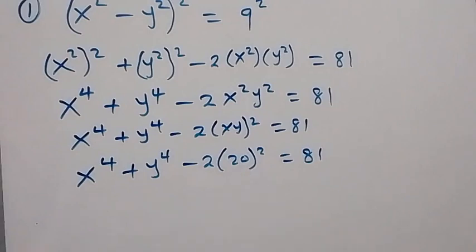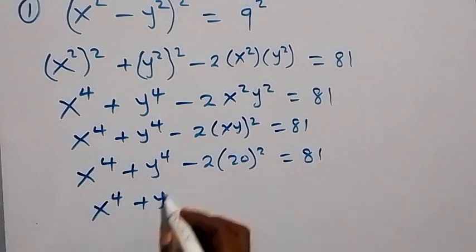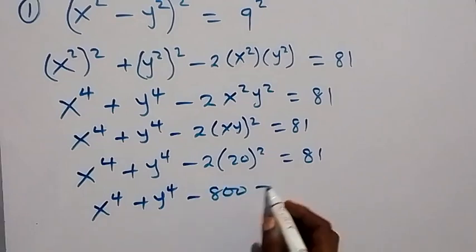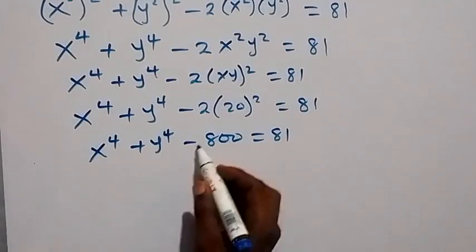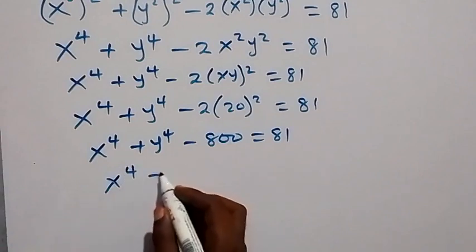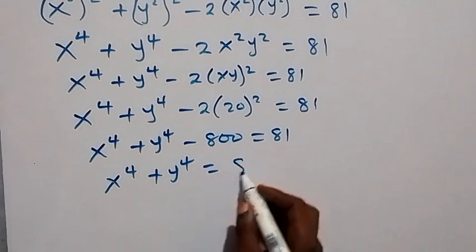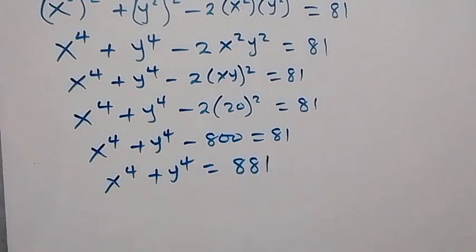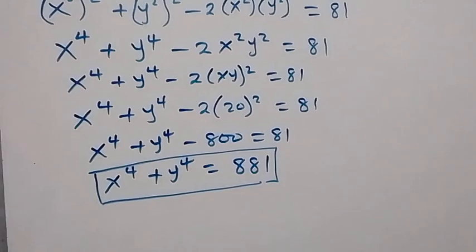Now 20 squared is 400, and 400 times 2 is 800. So we have x raised to power 4 plus y raised to power 4 minus 800 equals 81. Taking minus 800 to the other side gives us x raised to power 4 plus y raised to power 4 equals 881.